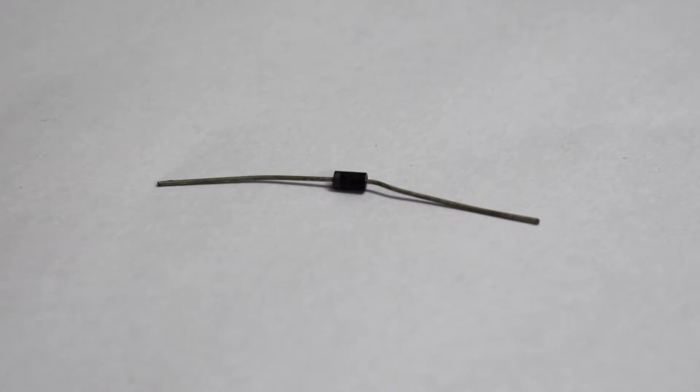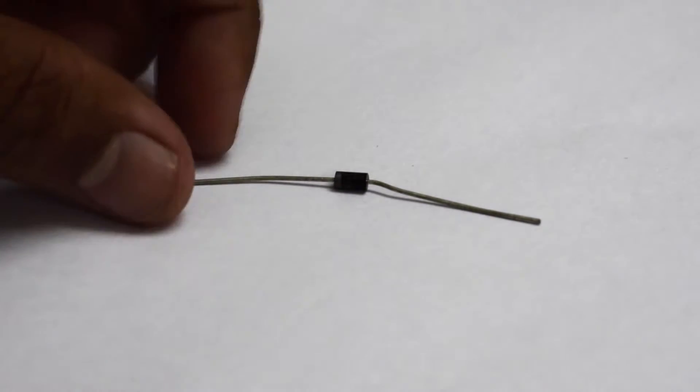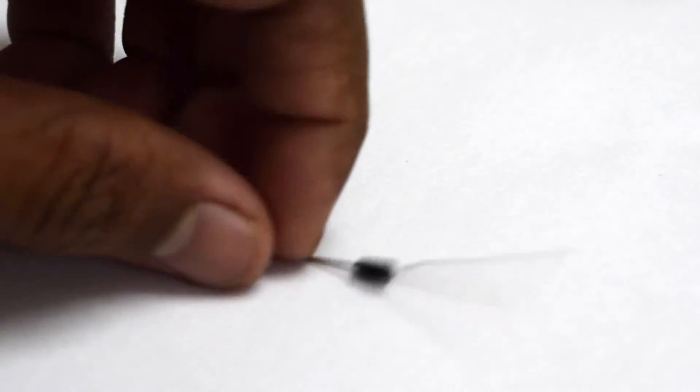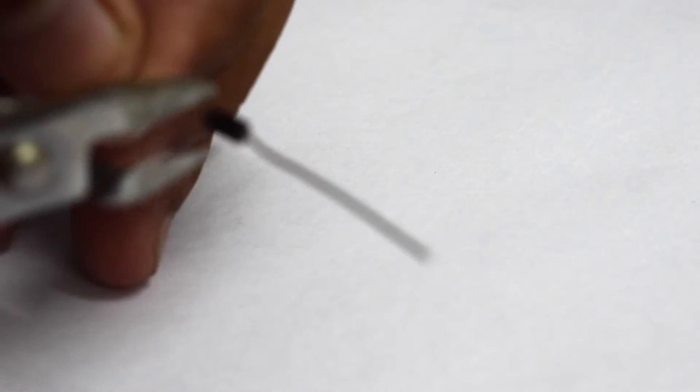This is a PN junction diode in its basic form, the IN4007 variant, and we are going to break it open right now. I'm going to cut it into two pieces.